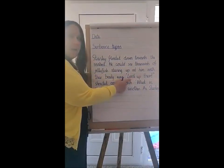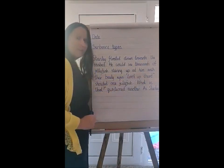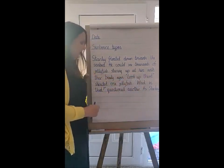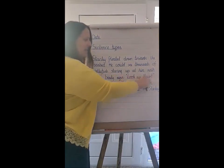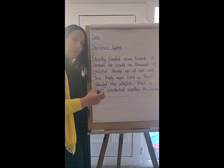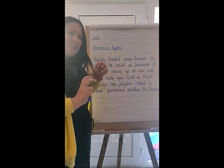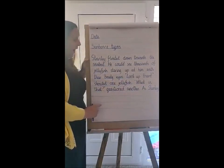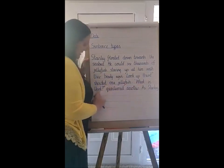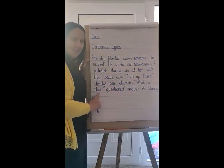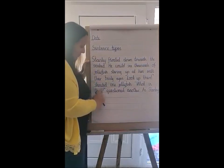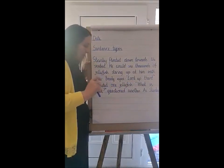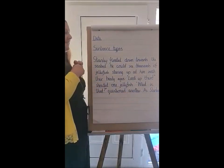Oh, what's this? It says 'Look up there!' — that's a command, good! I've put a command into my writing with dialogue — those are the words the characters have spoken. I've used inverted commas to show exactly the words that have been spoken: '"Look up there!" shouted one jellyfish.' And then: '"What is that?"' — yes, it's a question, with a question mark. '"What is that?" questioned another, as Stanley approached the seabed.'